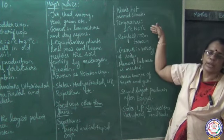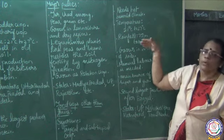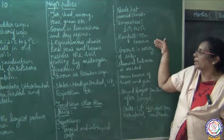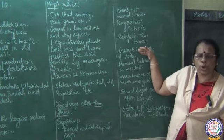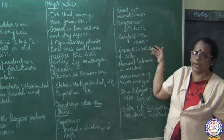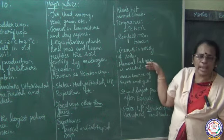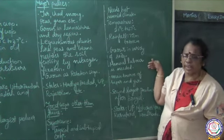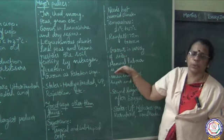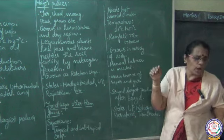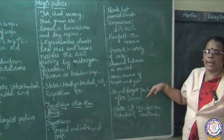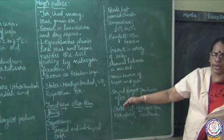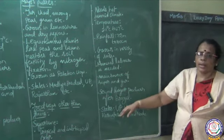Sugarcane requires a temperature of 21 to 27 degrees Celsius and a rainfall of 75 to 100 centimeters. It grows well in a variety of soils. Manual labor is greatly needed for sugarcane production. The main products of sugarcane are sugar and jaggery. Brazil is the largest producer of sugarcane, followed by India. Important sugarcane growing states include Uttar Pradesh, Maharashtra, Karnataka and Tamil Nadu.